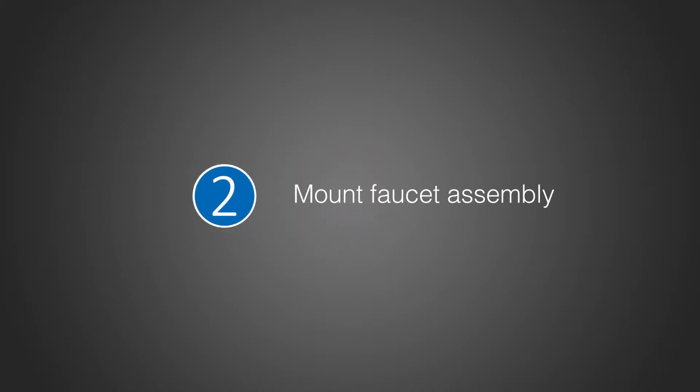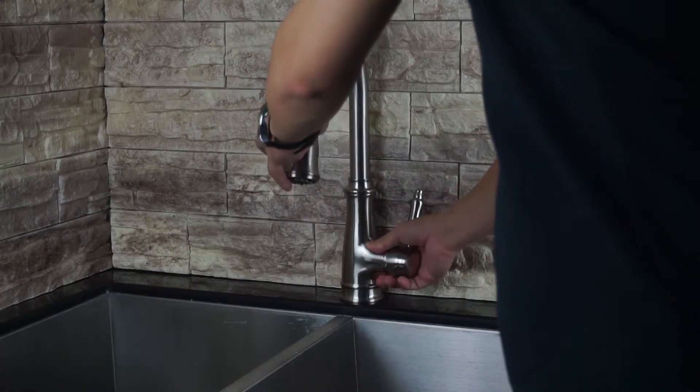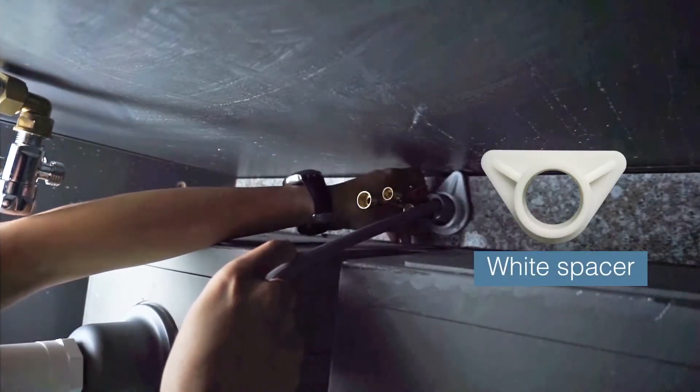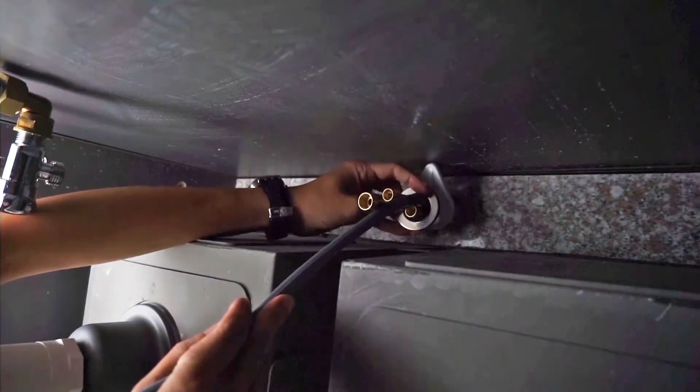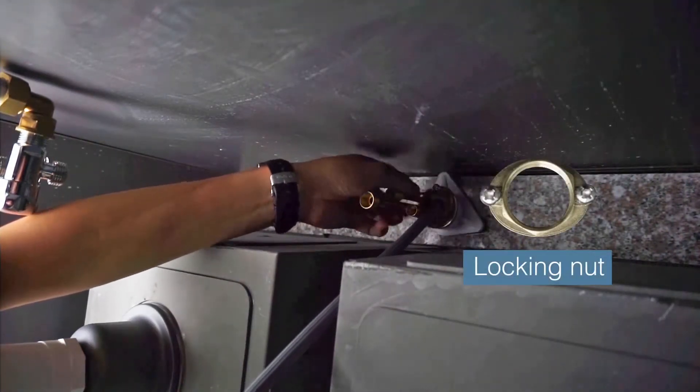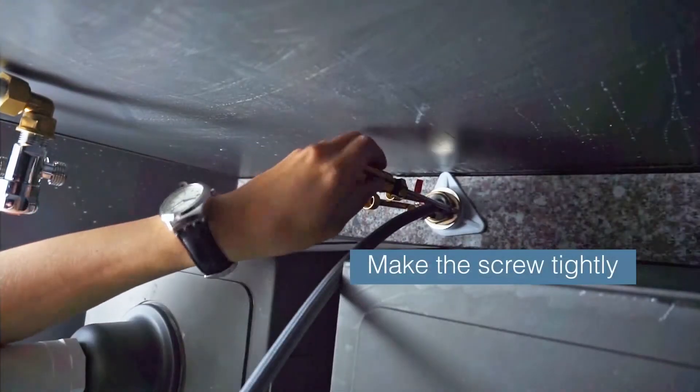Mount faucet assembly. Install faucet through center hole. Install vinyl spacer, rubber washer and metal washer. Using a screwdriver, tighten the lock nut screws so that the faucet is secured and will not rotate.